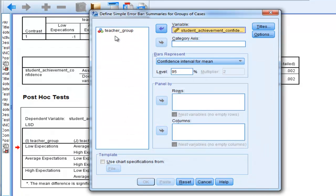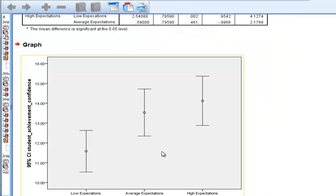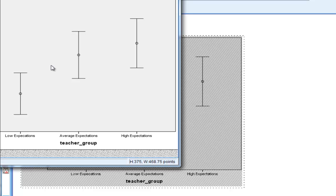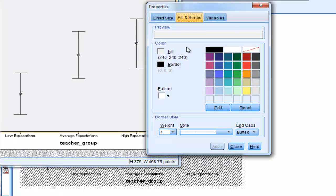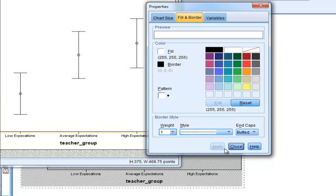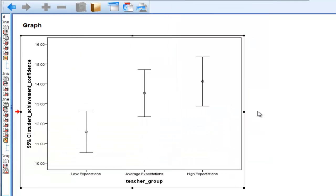So I put student achievement and teacher group to create this chart. And let me show you what SPSS does as a default. So if I got rid of the white fill, you get something like this.